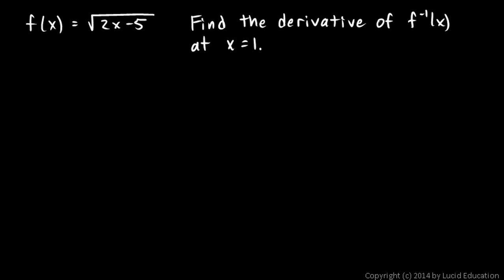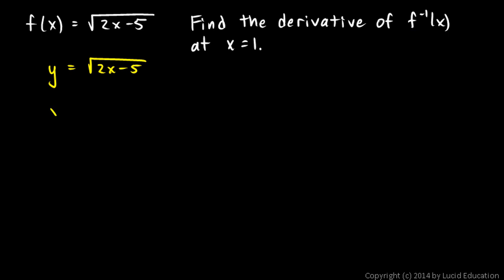In this problem we're given f of x is the square root of 2x minus 5, and we're told to find the derivative of f inverse at x equals 1. I'm going to do this algebraically, so let's rewrite the function as y equals the square root of 2x minus 5, and we'll find the inverse by switching x and y. So we write x is the square root of 2y minus 5, and then we solve for y.